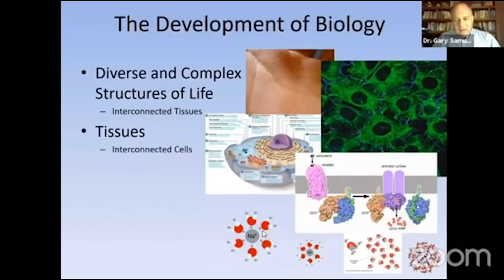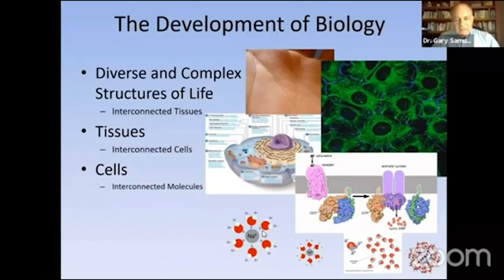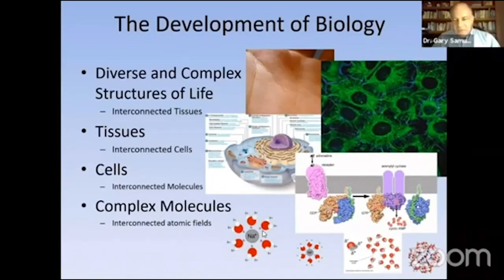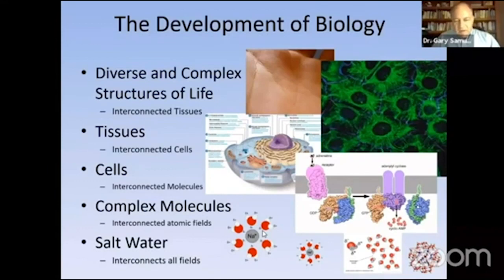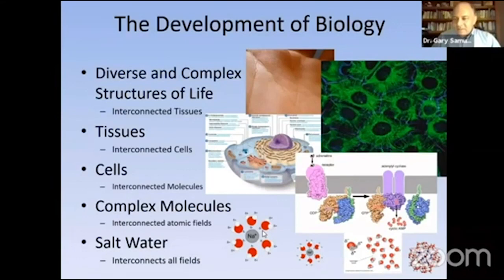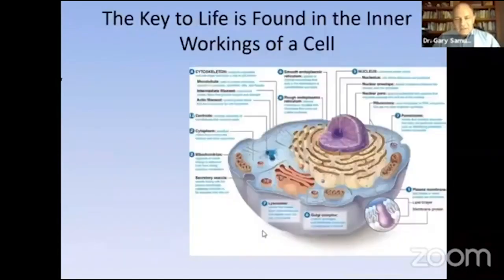As we're developing biology, we start realizing that we are made out of a bunch of tissues, and those tissues are made of interconnected cells. These cells have all sorts of things happening — a metropolis of activity inside, from complex molecules that are connected and orchestrated. They're all connected through the saltwater medium. Everything in biochemistry and chemistry takes place in salt and water, and that salt and water also becomes oxidized and reduced, which is what they call redox — reduction oxidation.